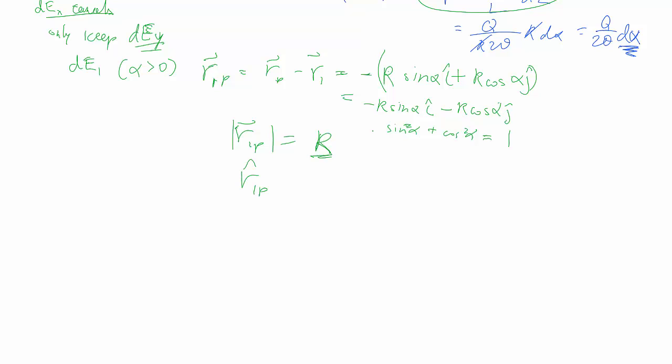Then for the r-hats, we just divide R through everything. So we're left with sine alpha in the i-hat plus negative cosine alpha in the j-hat.